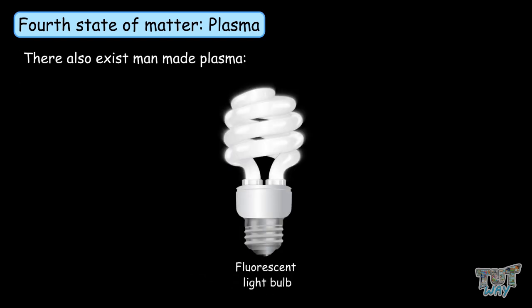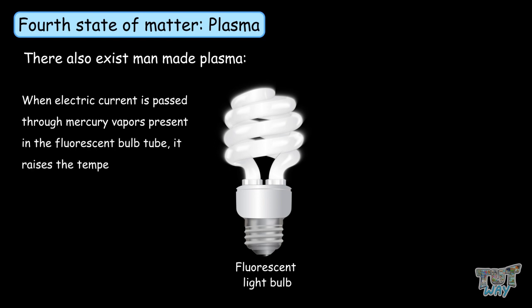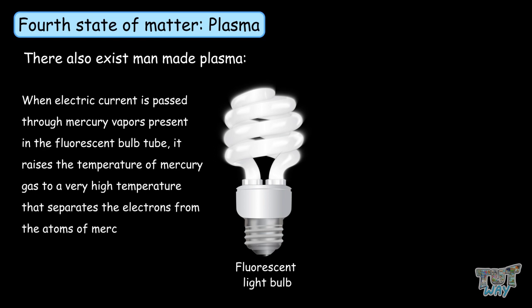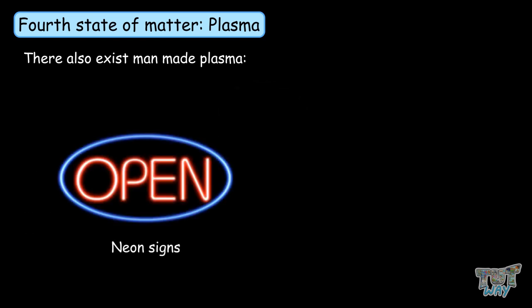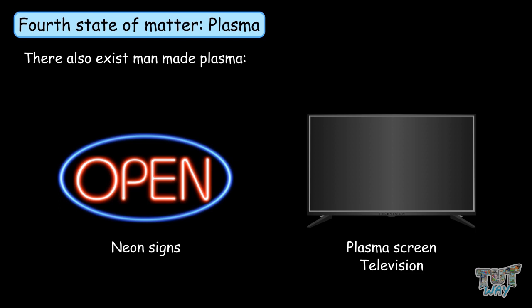Plasma is also present in fluorescent light bulbs. When an electric current is passed through mercury vapors present in the fluorescent bulb tube, it raises the temperature of mercury gas to a very high temperature that separates the electrons from the atoms of mercury and forms plasma. Neon signs and plasma screen televisions are all examples of plasma.